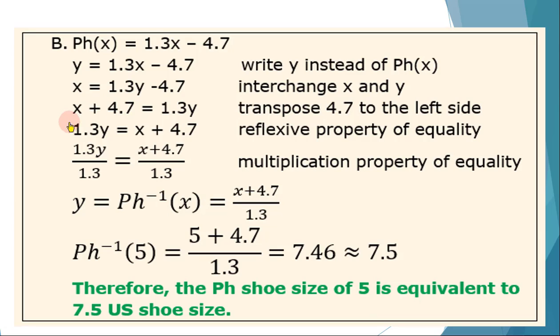Then we add both sides of the equation by 4.7 to get rid of negative 4.7 on the right hand side. So this becomes x + 4.7 = 1.3y or simply we can say transpose 4.7 to the left side. Then we have 1.3y = x + 4.7. We are having the reflexive property of equality. Then multiplication property of equality by multiplying 1 over 1.3 to both sides of the equation. Then finally, we have y = Ph⁻¹(x) = (x + 4.7)/1.3.